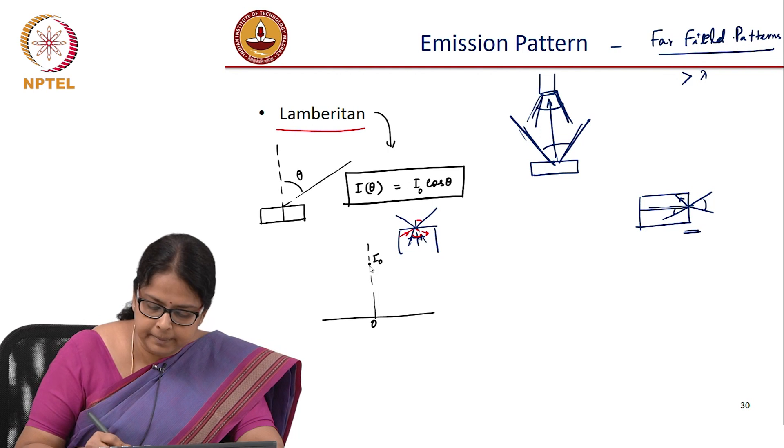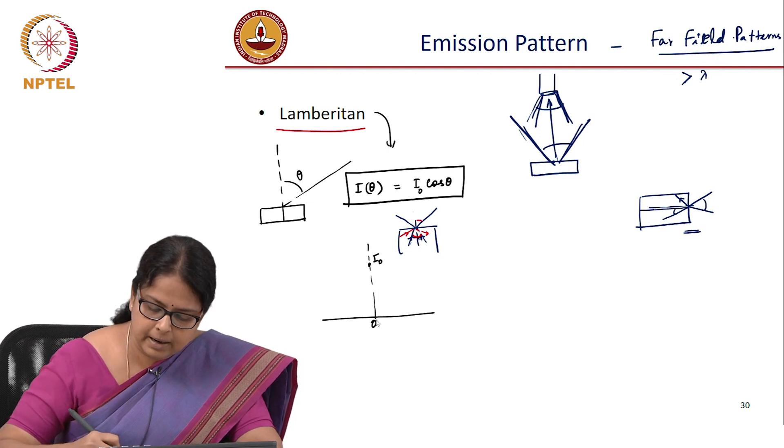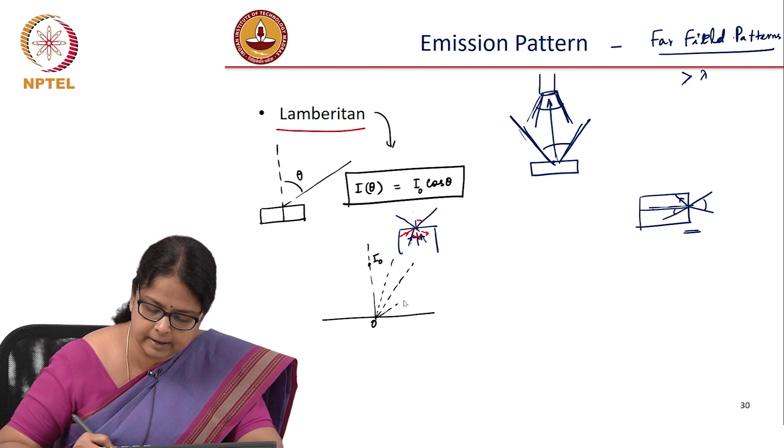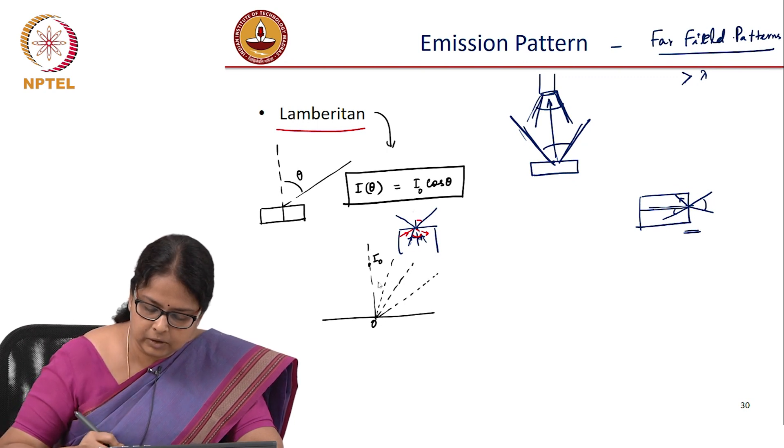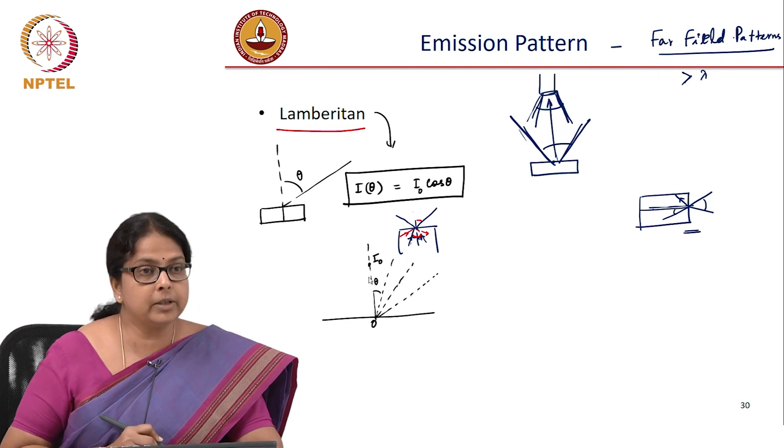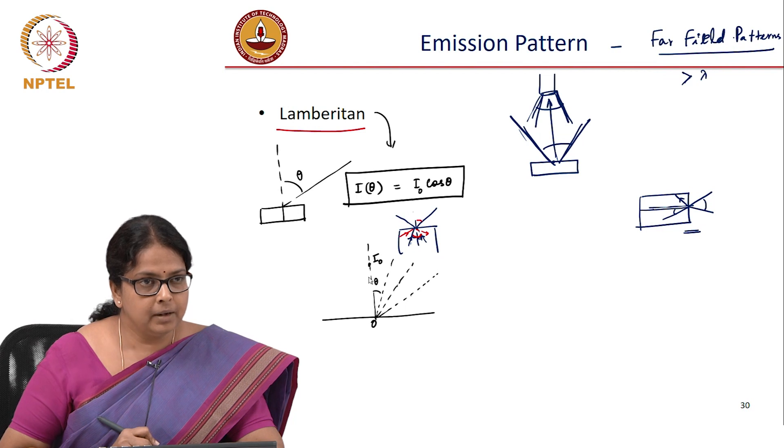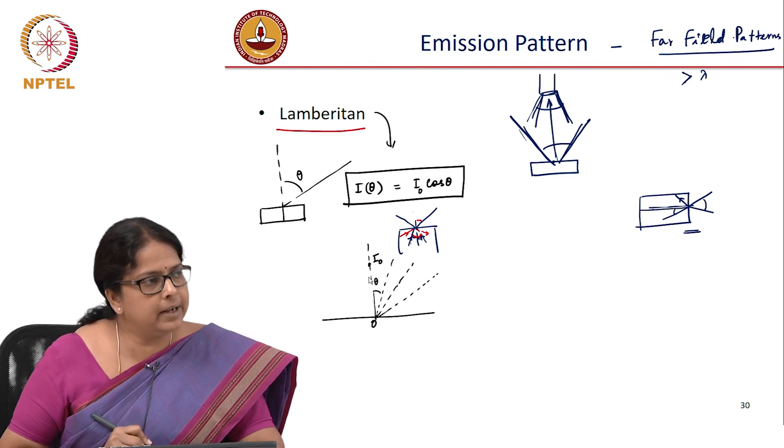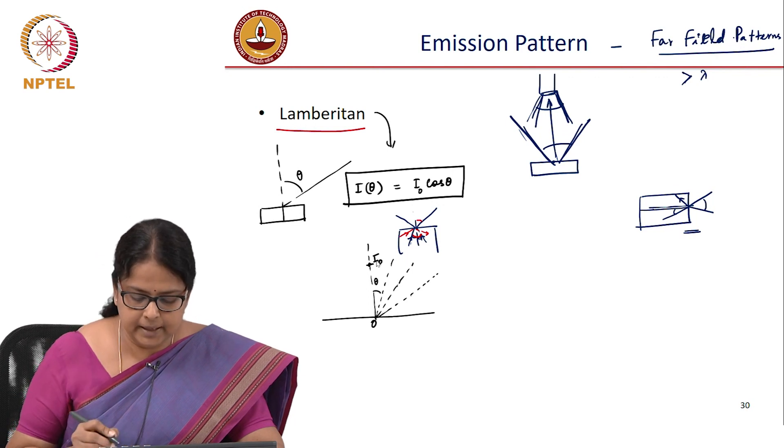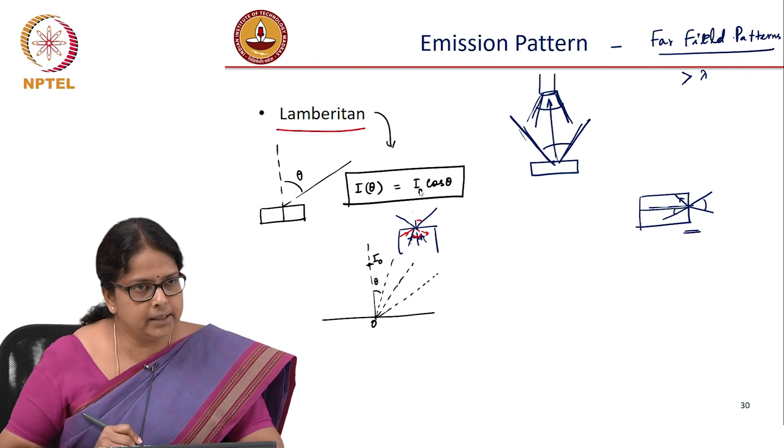If I do a polar diagram, I mark angles corresponding to 45 degree, 60 degree, etcetera. So, this is let us say 30 degree, this is 45 degree, this is 60 degree and theta is measured with respect to the normal. How would the polar plot of a Lambertian look like? Peak is I naught and it goes as cos theta.